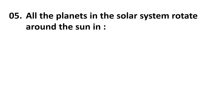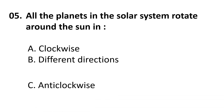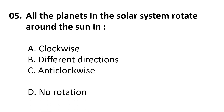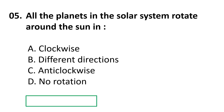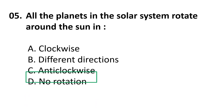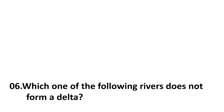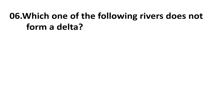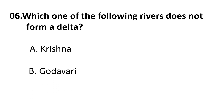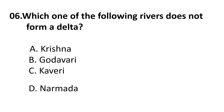Question 5: All the planets in the solar system rotate around the sun in — choices are: A) Clockwise, B) Different direction, C) Anti-clockwise, D) No rotation. The correct answer is C) Anti-clockwise. Question 6: Which one of the following rivers does not form a delta? A) Krishna, B) Godavari, C) Kaveri, D) Narmada.